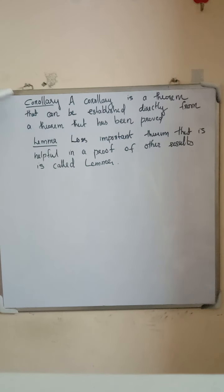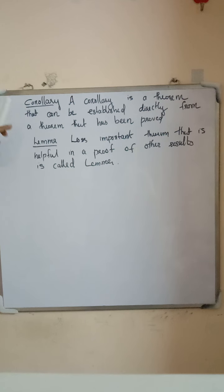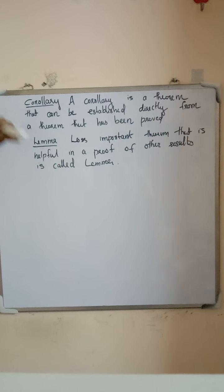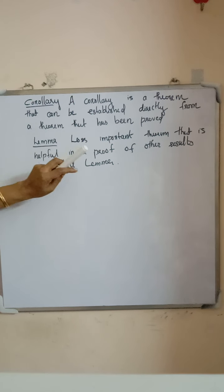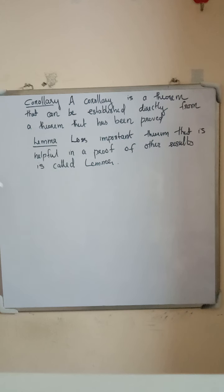Next, we define the term corollary. A corollary is a theorem that can be established directly from a theorem that has been proved. A corollary has a proof and is derived from the theorem.